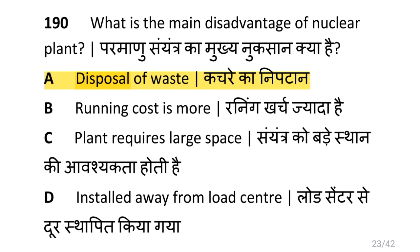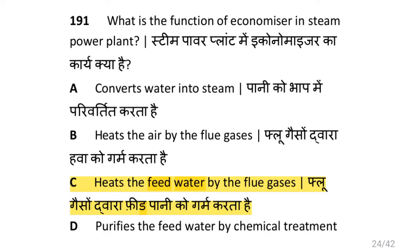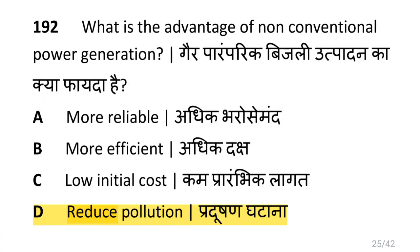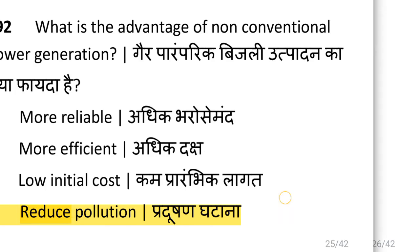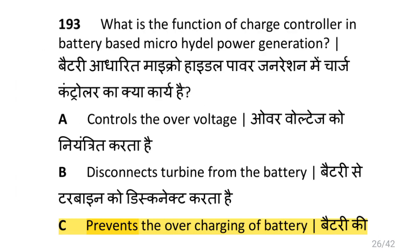What is the main disadvantage of nuclear plant, i.e. disposal of waste? What is the function of economizer in steam power plant, i.e. heats the feed water by the flue gases? What is the advantage of non-conventional power generation, i.e. reduce pollution? What is the function of charge controller in a battery-based micro-hydro power generation, i.e. to prevent the overcharging of battery?